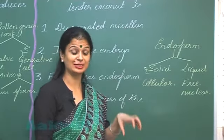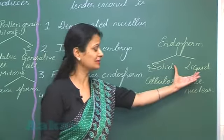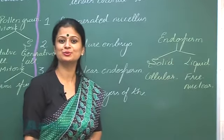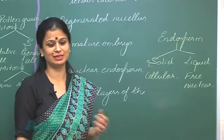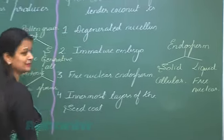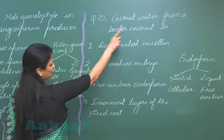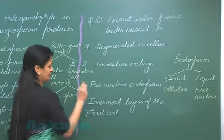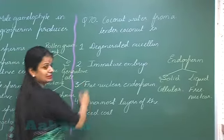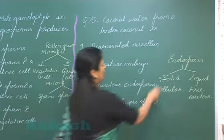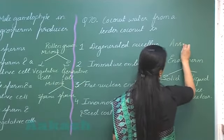And this liquid endosperm is also known as coconut milk. So what is the right option here? The coconut water, the coconut milk that represents free nuclear endosperm. So the right option is option number three.